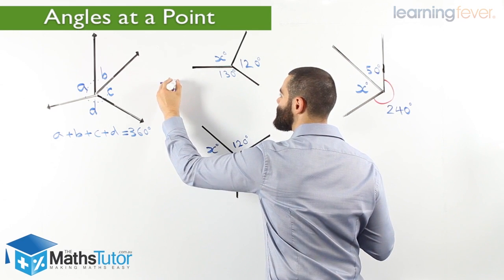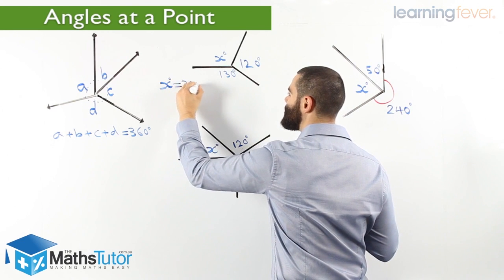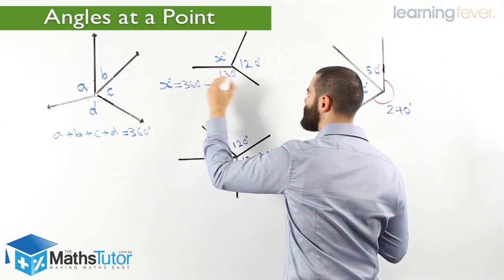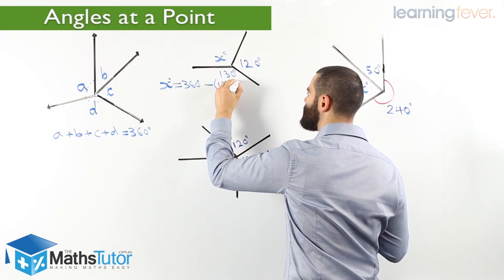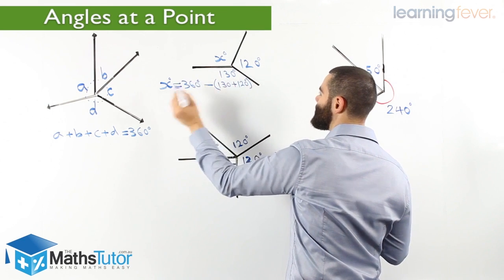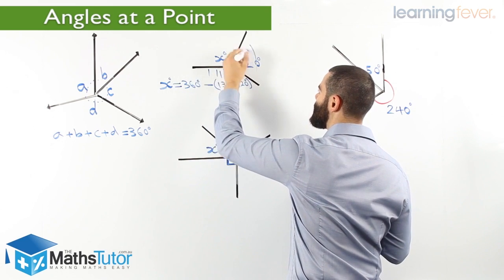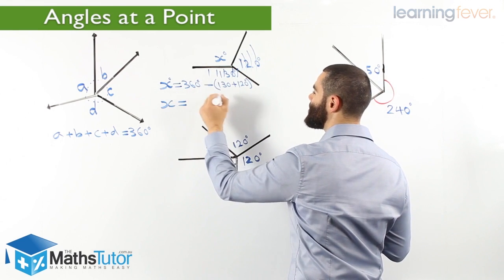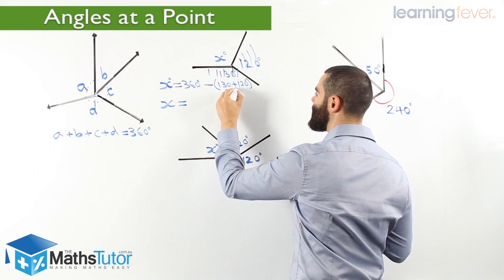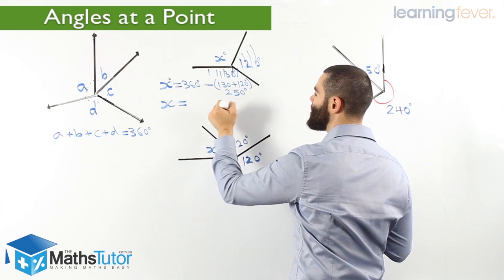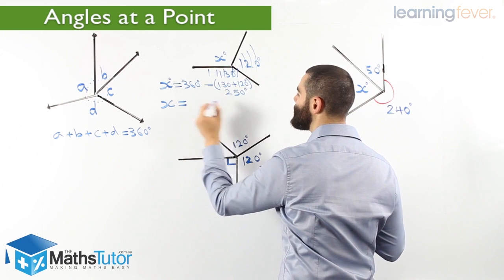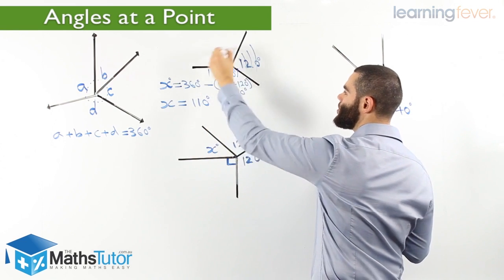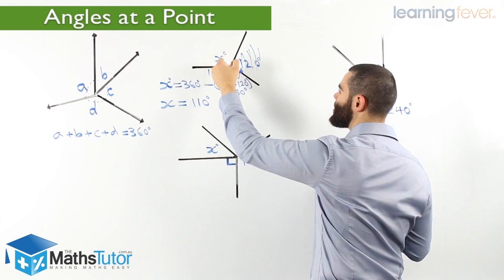Let's see how we're going to work out X using this rule. X equals 360 degrees, which is the total, minus 130 and minus 120. So we're going to take away the 130 and take away the 120. So X is going to be 360, take away 130, and 120 is 250 degrees, so X is going to be 110 degrees.